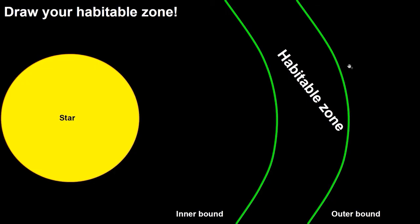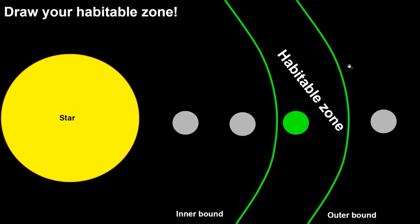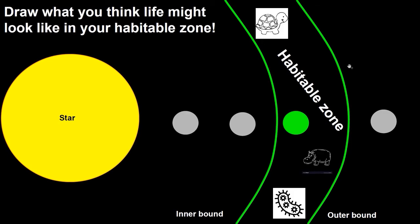Mark the inner and outer bounds of your habitable zones on your page, similar to what we've done here. What do you notice? How big is your habitable zone? Take a minute to draw some planets in your habitable zone and what you think life might look like there — no wrong answers here. Now compare your solar system with your neighbors. If you chose the largest and brightest star, HR 8799, your habitable zone is biggest and furthest away. This is because a larger and brighter star has a farther reach than a smaller, cooler star.